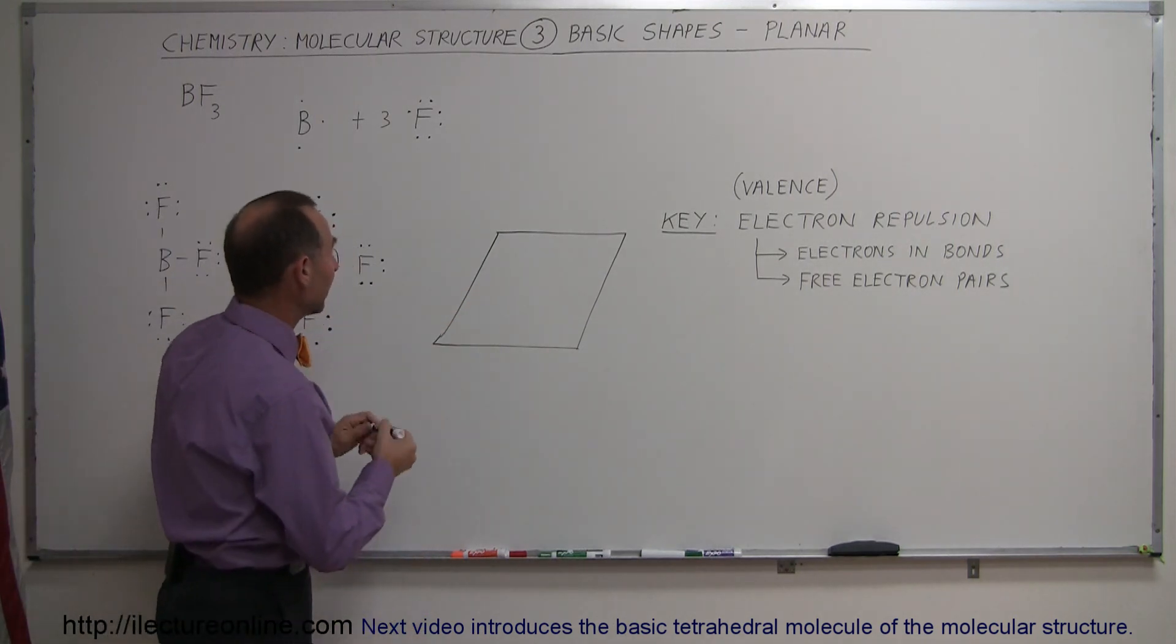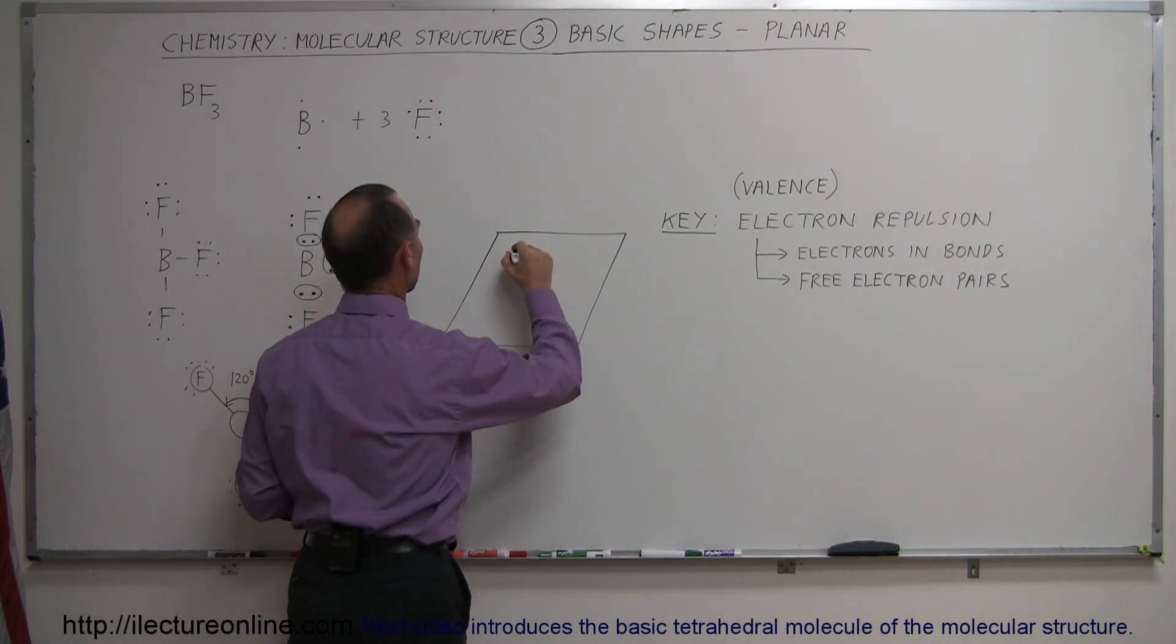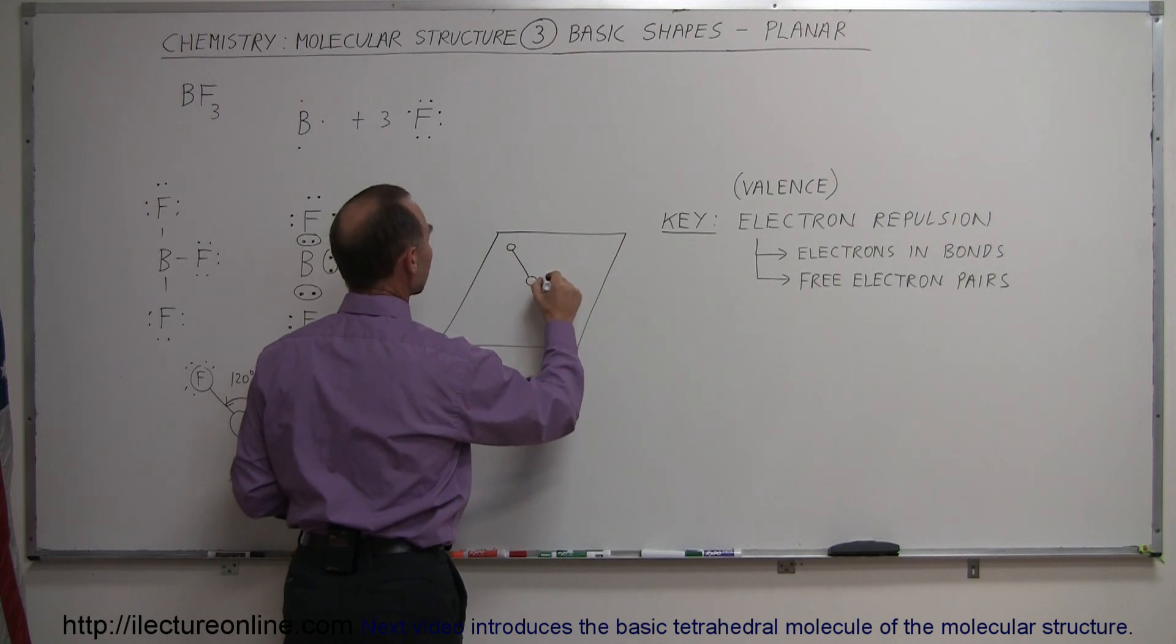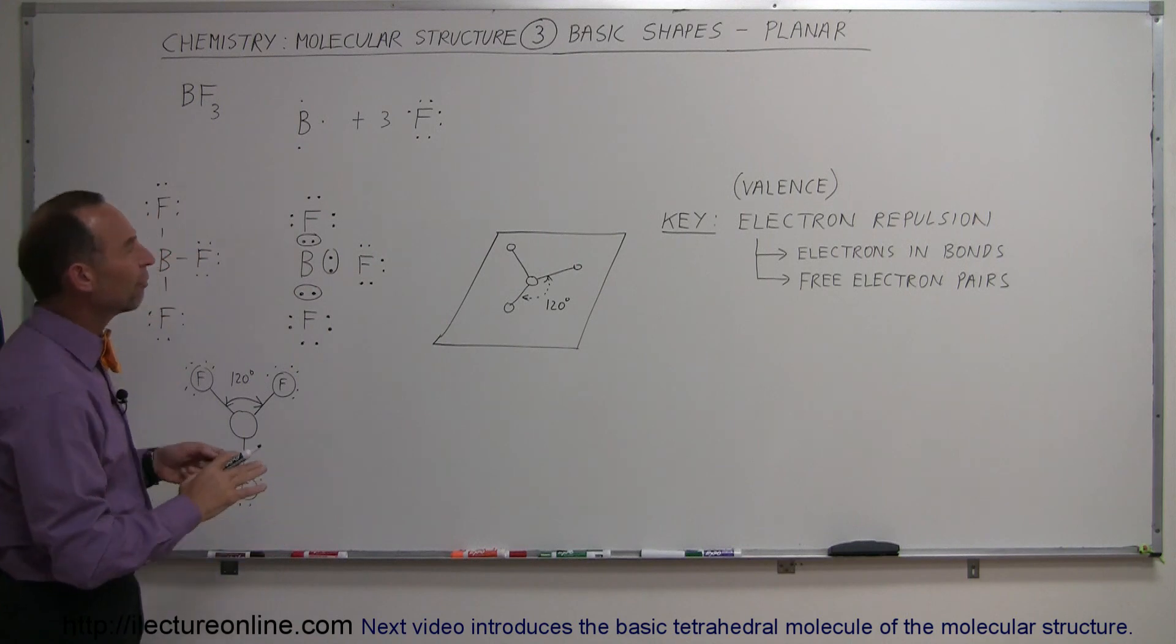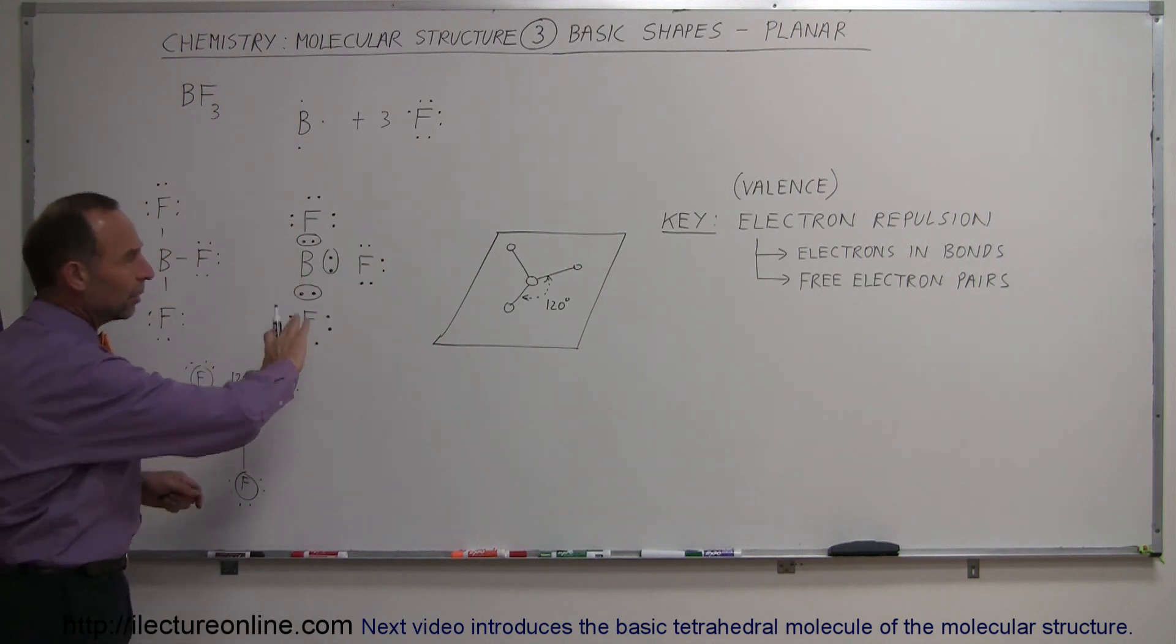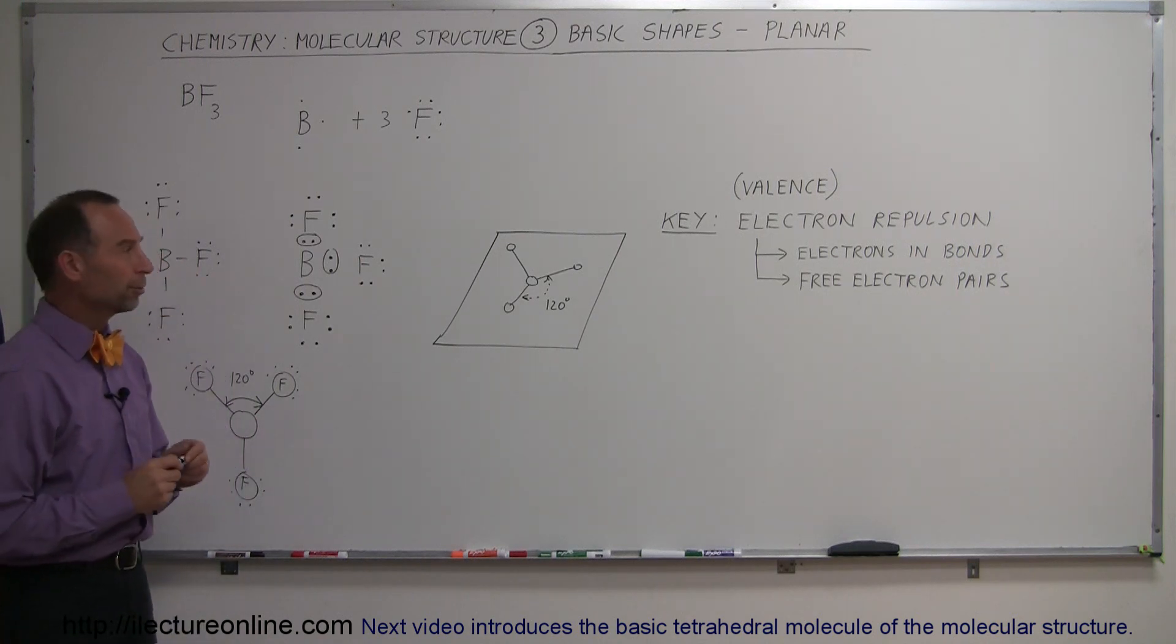If you're going to draw that on a sheet like this, you can say, okay, I'll draw the boron in the center. You can draw an atom in this direction, an atom in this direction, and an atom in this direction. Notice that the angle between any two would always have to be 120 degrees. So that's a visualization of what it would look like, everything in the same plane structure. That's a simple example of a planar-shaped molecule.